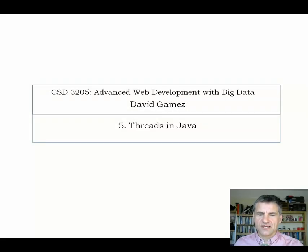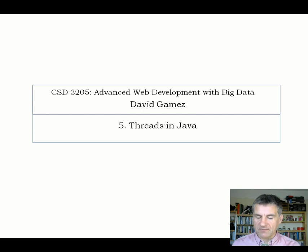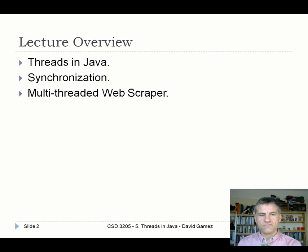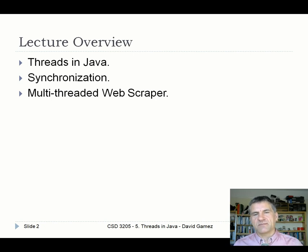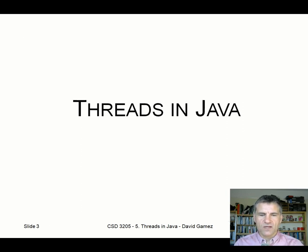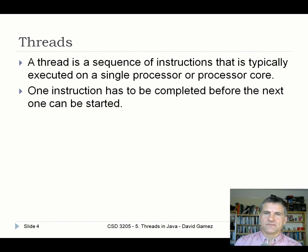Welcome to lecture 5 of CSD 3205. In this lecture I'm going to be covering threads and how you can implement them in Java. I'll start by introducing threads, explain how you can write multi-threaded programs in Java, then explain how you can use synchronization to handle situations where multiple threads are trying to access the same data structure, and briefly show you how to build a multi-threaded web scraper.